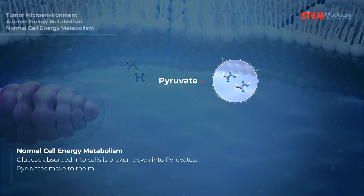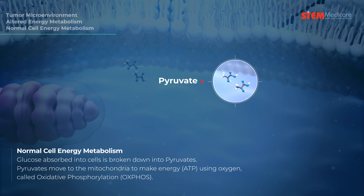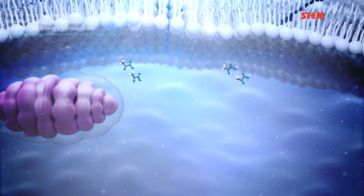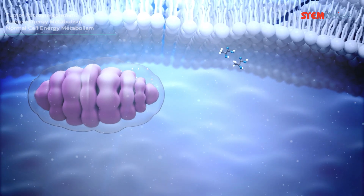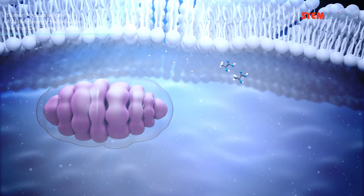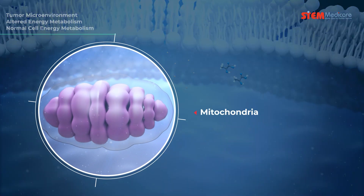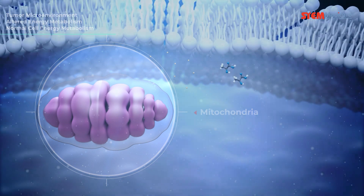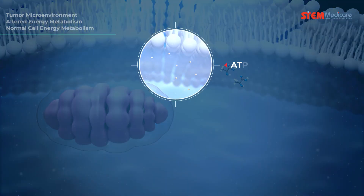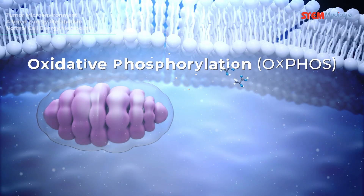Glucose absorbed into cells is broken down into pyruvate. In normal cells, pyruvate moves to the mitochondria to make ATP using oxygen. Mitochondria are energy factories that produce ATP essential for cell survival.